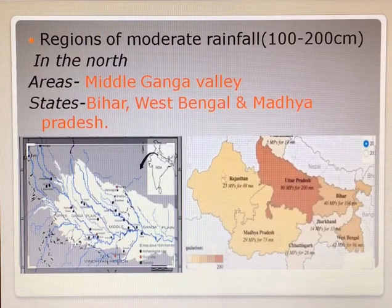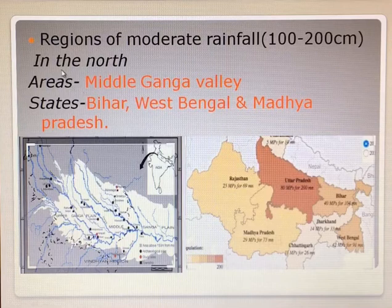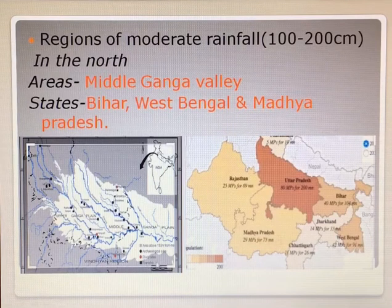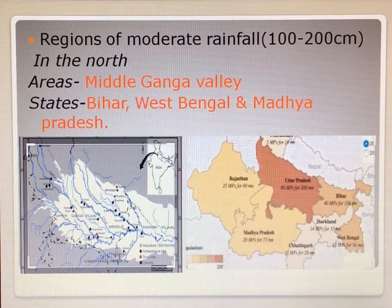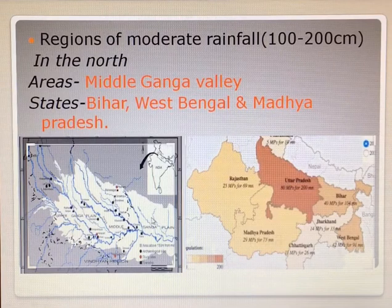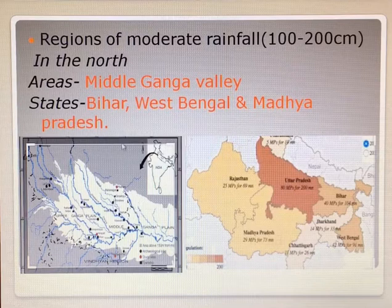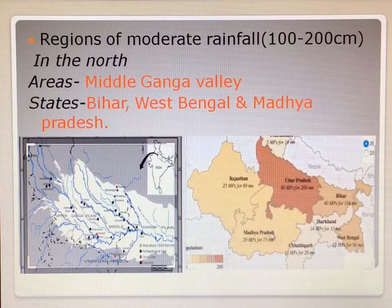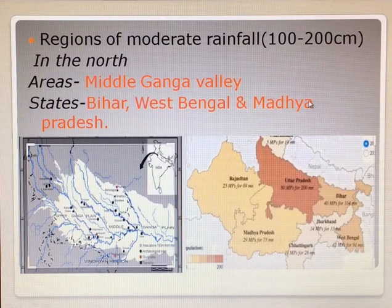The next is the regions of moderate rainfall, that is between 100 to 200 cm. First we will go to the northern part. Areas like the Middle Ganga Valley — you can see on the map. For a river, it has got three courses: upper course, middle course, and lower course; this is the middle part. States like Bihar, West Bengal, and Madhya Pradesh receive 100 to 200 cm of rainfall.